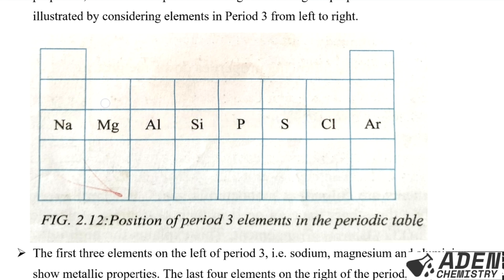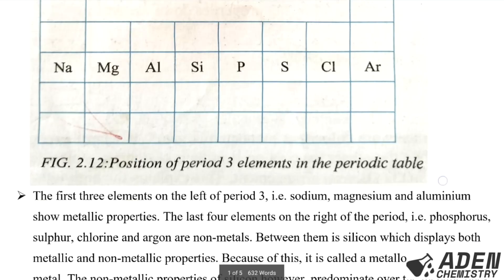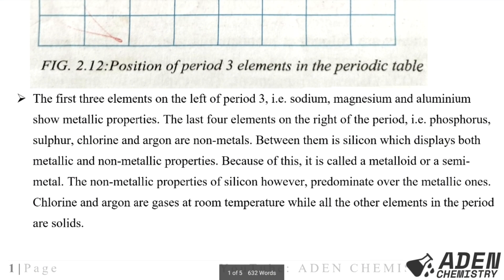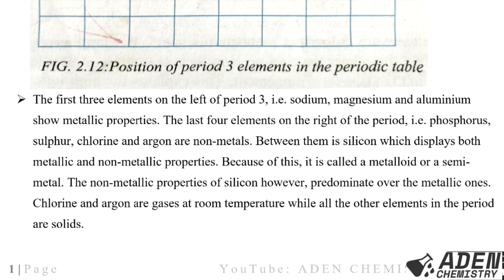There are eight period 3 elements: sodium, magnesium, aluminium, silicon, phosphorus, sulfur, chlorine, and argon. The first three elements on the left — sodium, magnesium, and aluminium — show metallic properties. The last four on the right — phosphorus, sulfur, chlorine, and argon — are non-metals and show non-metallic properties. Between them is silicon, which displays both metallic and non-metallic properties.